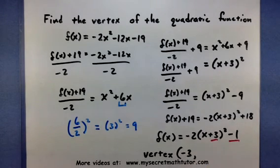So negative 3. The y-coordinate is the same as the number outside the parentheses, negative 1. So our parabola has a vertex at (-3, -1). If you'd like to see some more videos, please visit mysecretmathtutor.com.